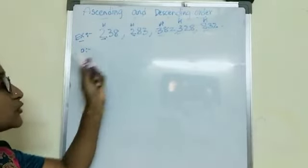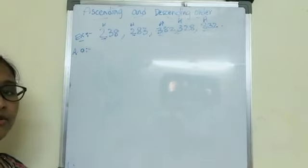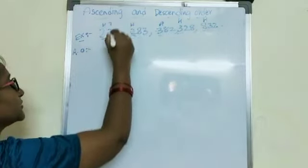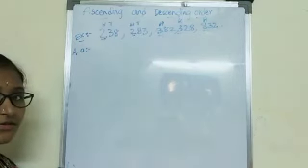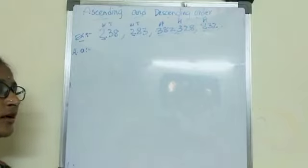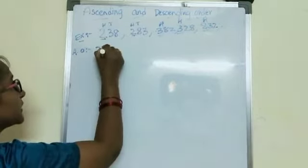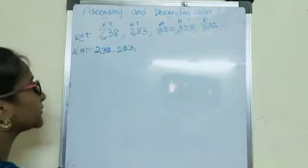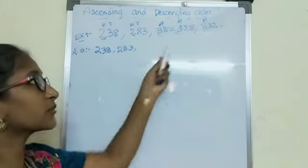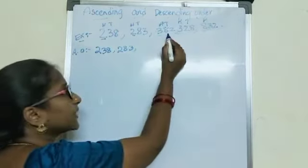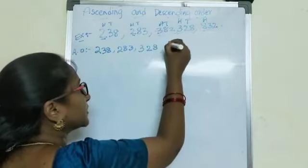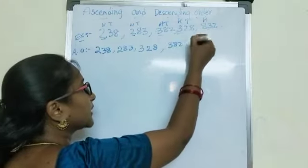But I have 2 numbers with the same hundreds place. When 2 numbers have the same hundreds place, I should go and check their tens place. Here the tens place is 3, and here the tens place is 8. I am writing ascending order — small to big — so I need the smaller number. Either 3 or 8 — 8 is bigger, but I want smaller. So 238 is smaller than 283. After the 200s I have 300s, but there also I have 2 numbers with the same hundreds place, so I check tens place: here I have 8, here I have 2 — 328 is smaller. Next number is 382, and finally we have 832.